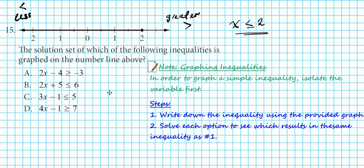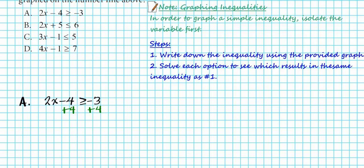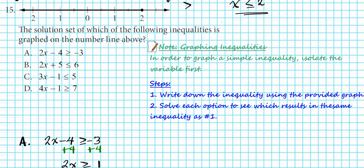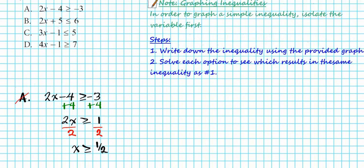Starting with option A: 2x minus 4 is greater than or equal to negative 3. Add 4 to both sides: 2x is greater than or equal to 1. Divide both sides by 2: x is greater than or equal to 1 half. That's not our desired inequality, so option A is not the answer. We proceed to option B: 2x plus 5 less than or equal to 6.